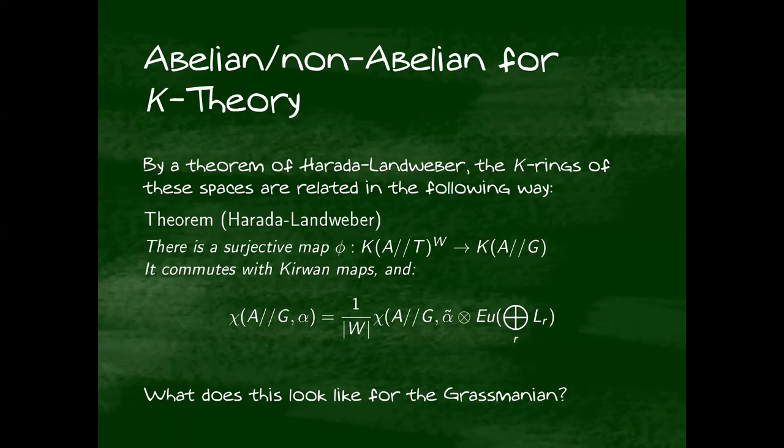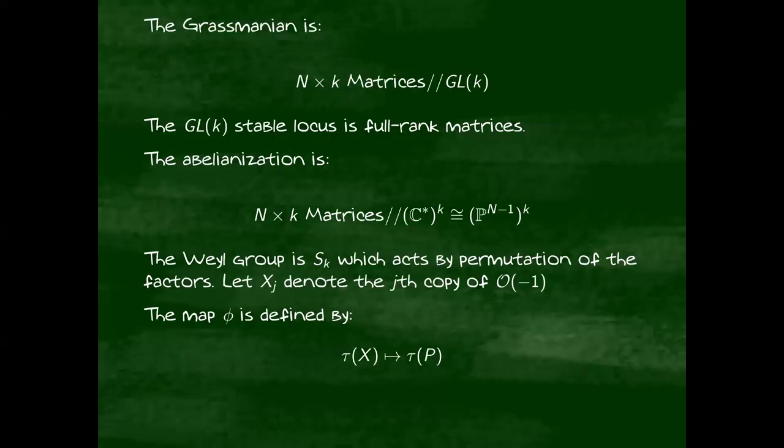What does this look like for the Grassmannian? The Grassmannian is the GIT quotient of N by K matrices mod GL(K). We are throwing out some unstable locus, in that case non-injective maps. The stable locus is full rank matrices.